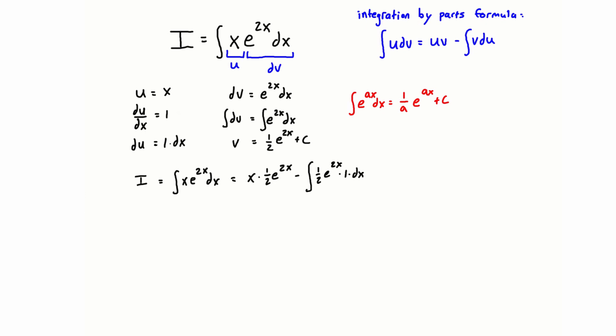All right, let's just simplify this a little bit. So we're going to have, we'll just rearrange this one to look a little bit nicer, 1 half x e to the 2x. Nothing really going on there, just rearranging. Minus, we can pull out this constant of 1 half times the integral of e to the 2x dx.